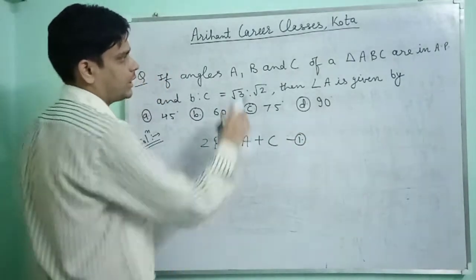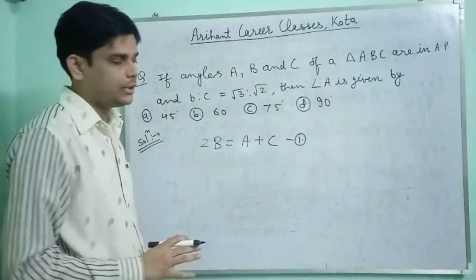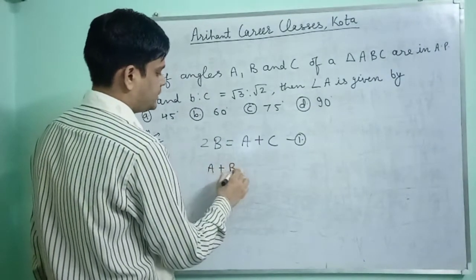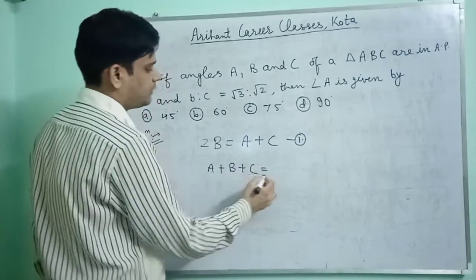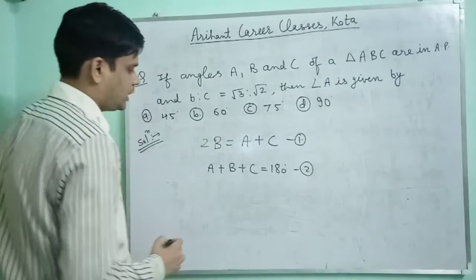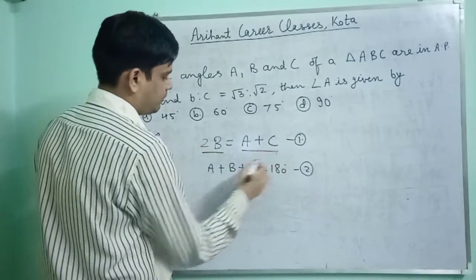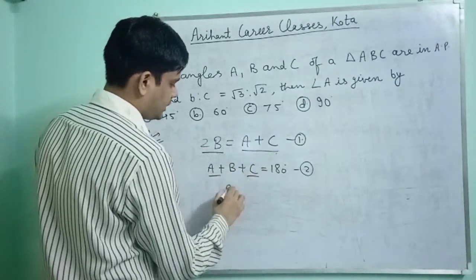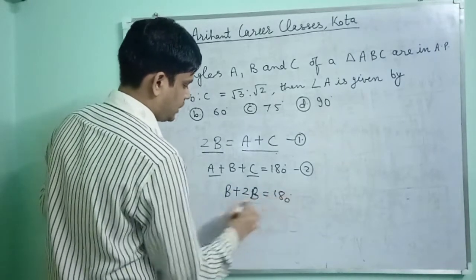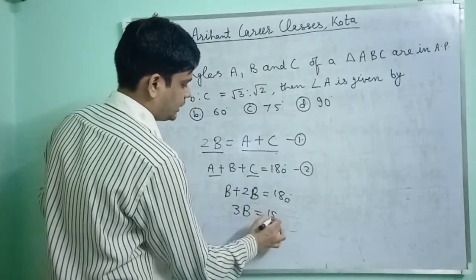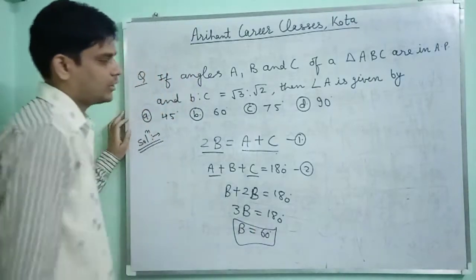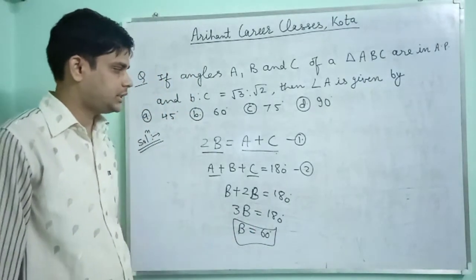According to the AP condition, 2B is equal to A plus C. Also, A plus B plus C equals 180 degrees. Substituting, we get 2B equals A plus C, so 3B equals 180 degrees, giving B equal to 60 degrees.